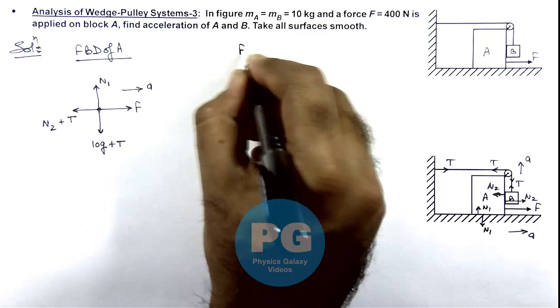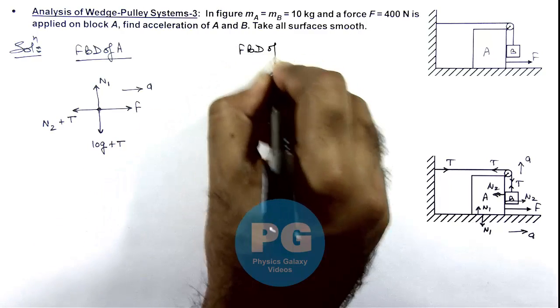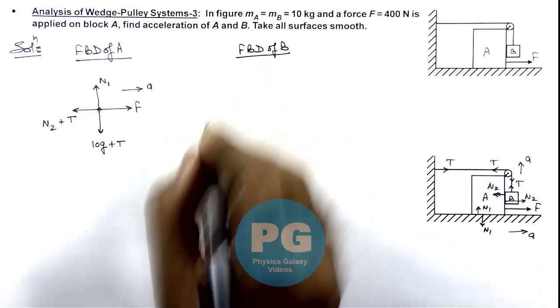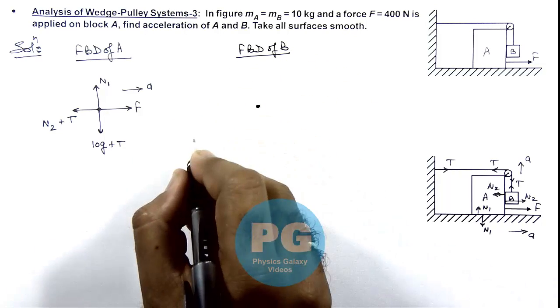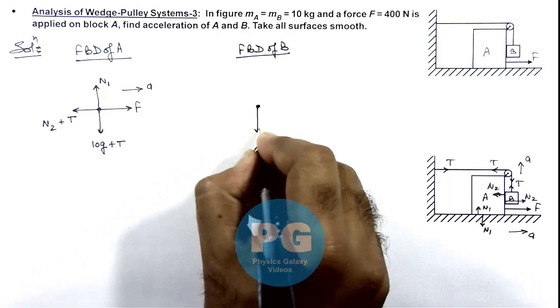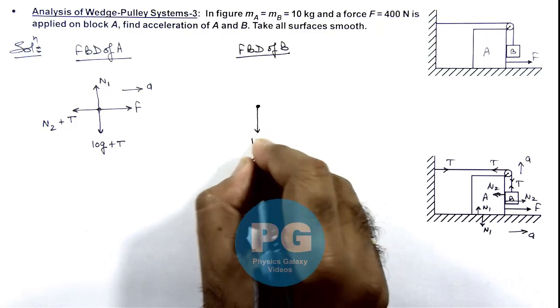Now, similarly if we draw the free body diagram of B. Here we can see. In downward direction it will be experiencing its weight that is 10g.